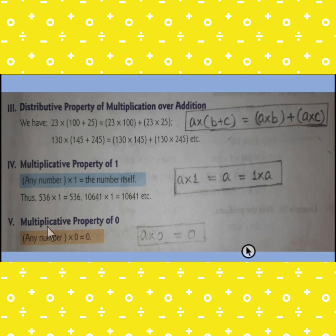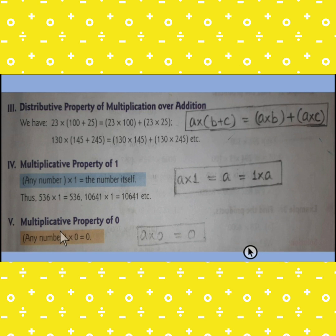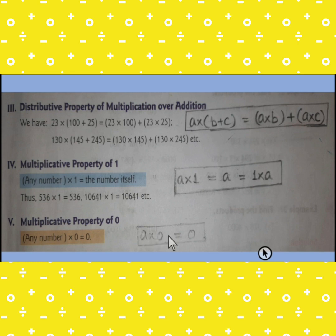The next property is the multiplicative property of 0. When we multiply any number by 0, we get 0. So A into 0 equals 0.